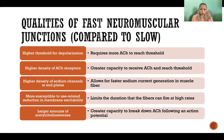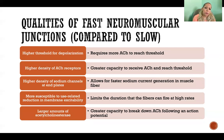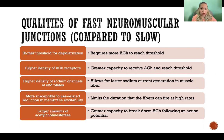In a fast neuromuscular junction — meaning where the motor neuron is sending a synapse to the muscle fiber that it controls — a fast neuromuscular junction has a higher threshold for depolarization, meaning that there has to be a greater amount of stimulus to cause the action potential to generate, to cause depolarization in the muscle fiber. It requires more acetylcholine to reach threshold, because acetylcholine is the stimulus in the case of muscle action potential.